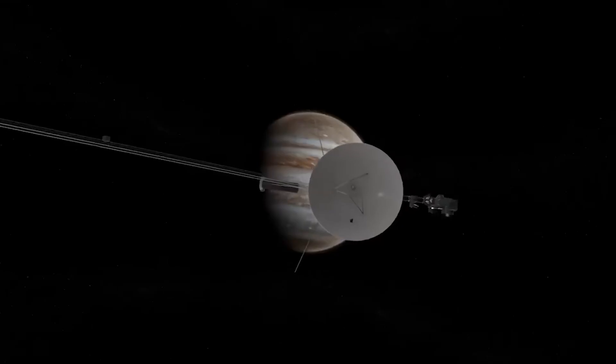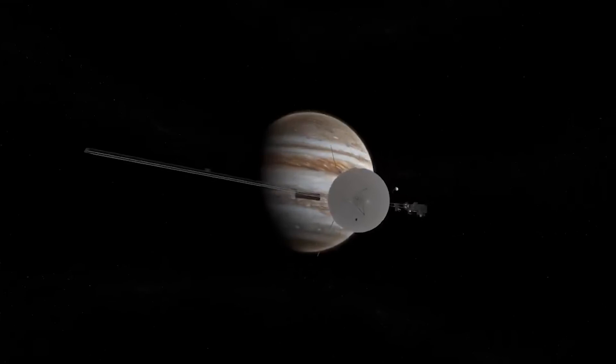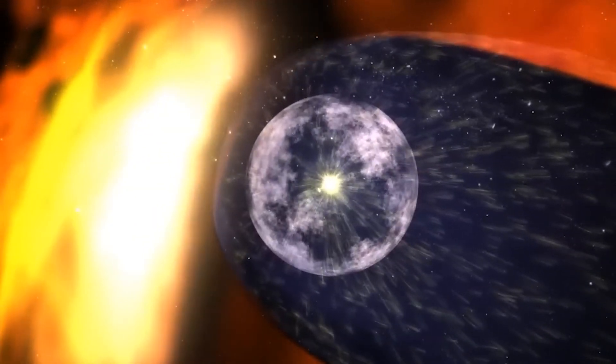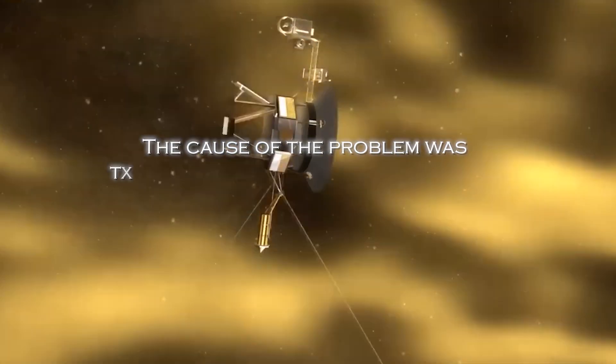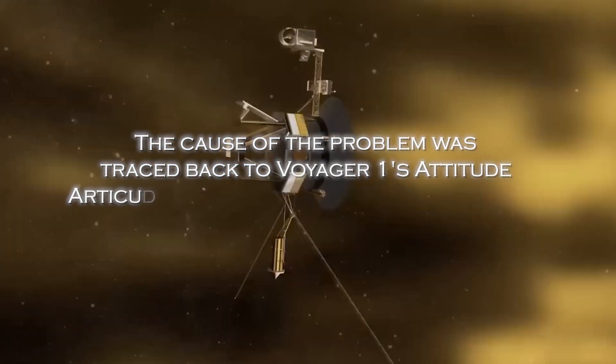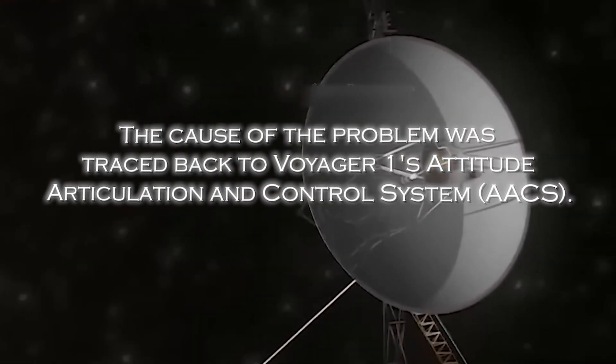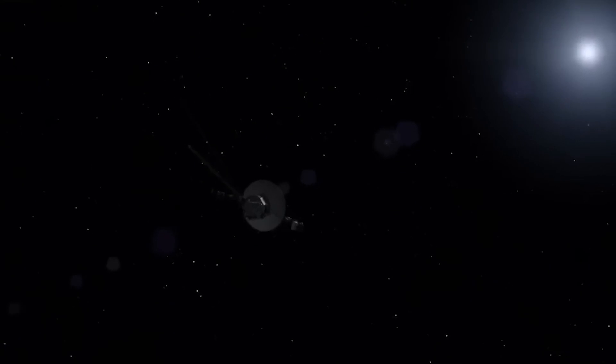After months of receiving encrypted data from the spacecraft, scientists and engineers were finally able to restore clarity and reliability to the information coming from the far reaches of interstellar space. The cause of the problem was traced back to Voyager 1's Attitude Articulation and Control System, or AACS, especially an onboard computer that was supposed to be inactive.